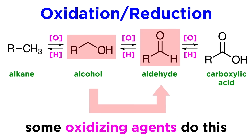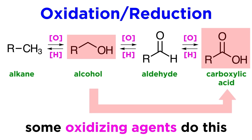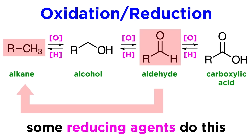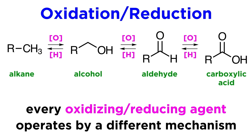Some oxidizing agents transform alcohols into aldehydes. Some transform alcohols into carboxylic acids. Some reducing agents transform carboxylic acids into alcohols. Some transform aldehydes into alkanes. Each of these reagents operates by a completely different mechanism, but we can always refer to these reactions as oxidations and reductions because of the definitions of these words.